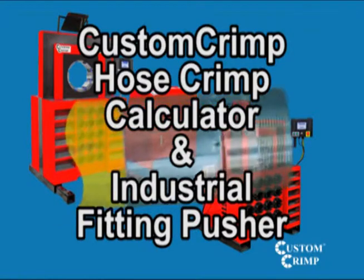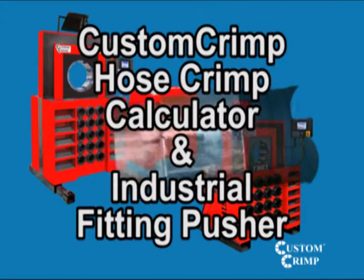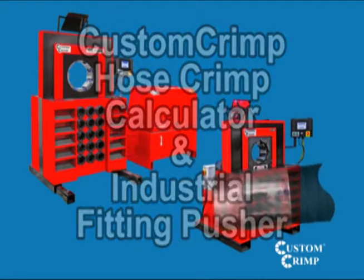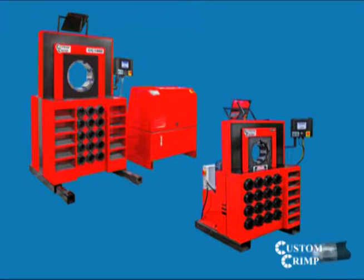With the introduction of the Industrial Hose Crimp Calculator on the Custom Crimp ACT Controllers, it is now possible to quickly and accurately crimp industrial hoses to the hose and fitting manufacturer's specifications without the use of charts and graphs.